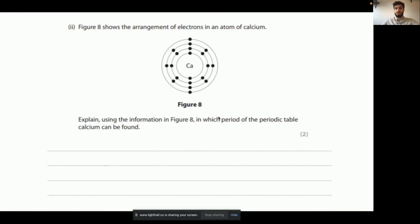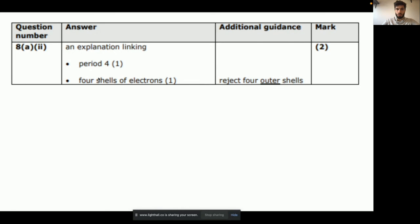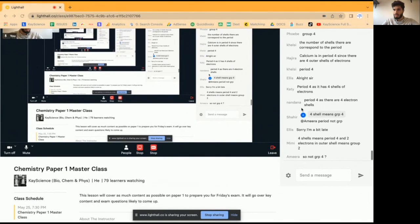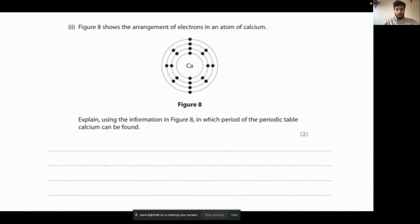Explain using the information figure A in which period of the periodic table calcium can be found. The way to approach this, you need to be thinking, how can I use this electron configuration diagram to tell me which period an element is in? Well, look, there are four shells. One, two, three, four. The period number tells us the number of shells. So if you work backwards, the number of shells will then tell us the period number. So to get this correct, you need to say period four, four shells of electrons. Simple as that. You just look at the diagram. If this was oxygen, oxygen would have two shells. So you'd be saying oxygen has two shells. So as in period two, that's all you say. Exactly. Period four as it has four shells. Ellis. Come on, mate. Not good enough there. Welcome though.